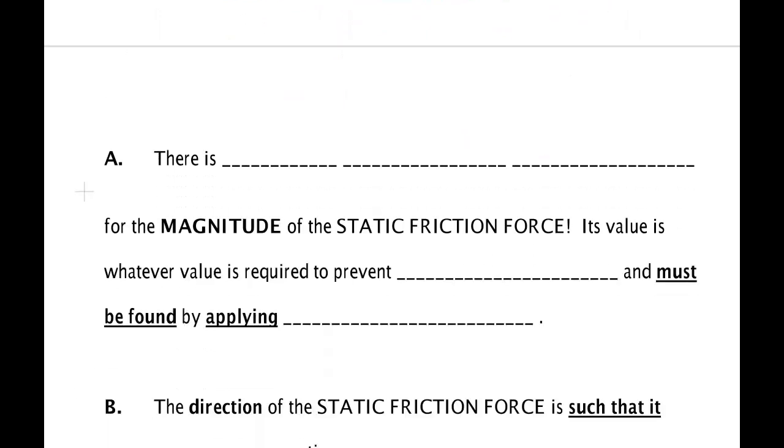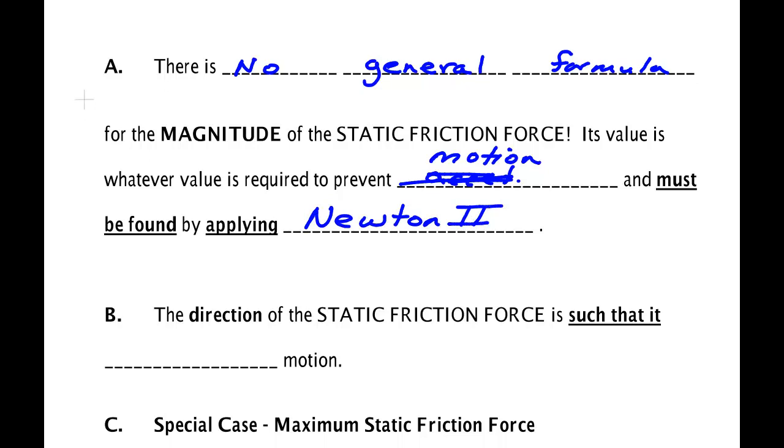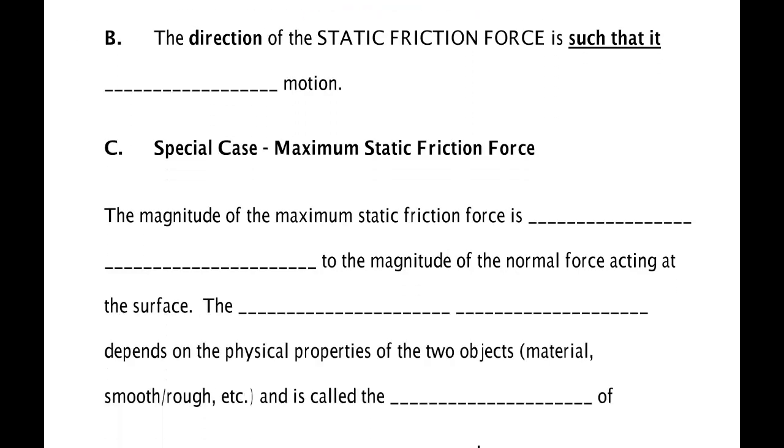Now let's put those guys into your notes here. The first is there is no general formula for the magnitude of the static friction force. Its value is whatever is required to prevent motion and must be found by applying Newton's second law. So no general formula, only Newton's second law. The direction of the static friction force is such that it's whatever direction opposes motion.